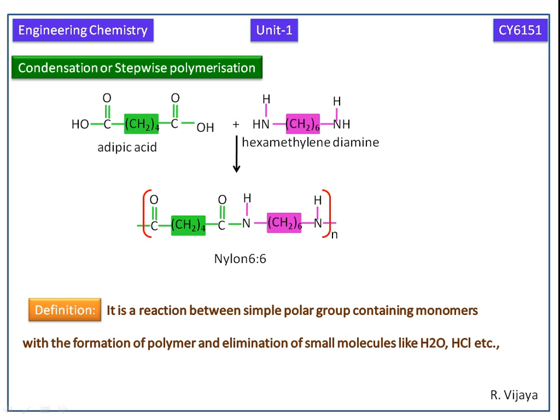Here, the first '6' comes from the carboxylic acid group with 6 carbon atoms — the 4th, 5th, and 6th carbons, giving us a total of 6 carbons from the carboxylic acid group. The second '6' comes from the hexamethylene diamine group, which also contributes 6 carbon atoms. So we get nylon 6-6 finally.